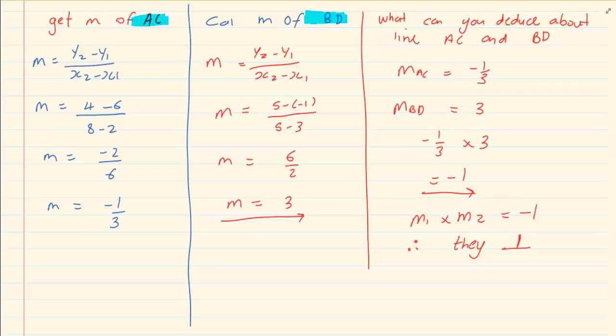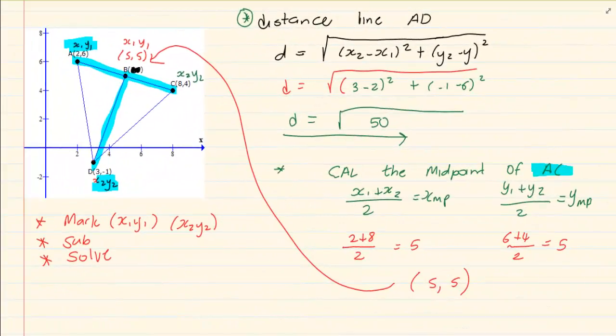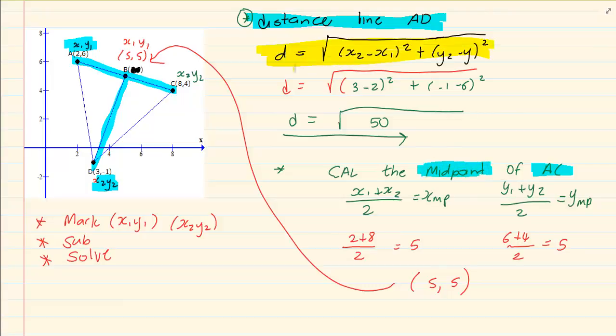So what have we learned from our summaries? Number 1. You need to know the distance formula. Number 2. You need to know the midpoint. Your distance is equal to the root of x2 minus x1 all squared plus y2 minus y1 all squared. Then your midpoint formula is x1 plus x2 over 2 is equal to the x of midpoint. y1 plus y2 over 2 is equal to the y of midpoint.